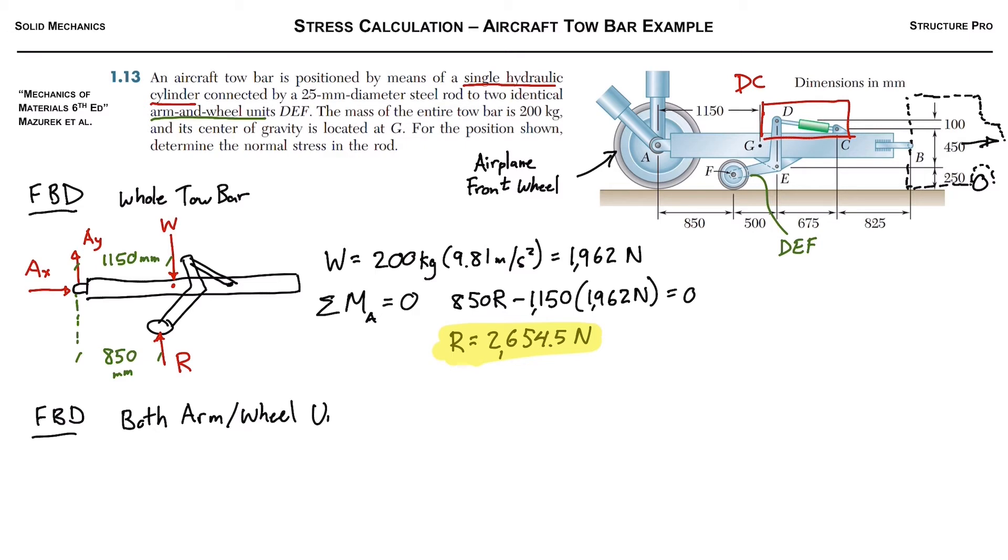So we're going to draw the elements DEF here, and so we'll just get started, draw the arm, and again draw the reactions. This time we're going to draw the force in the thing we're trying to figure out, DC or CD, and we'll draw it pushing so it'll be compression in that case.